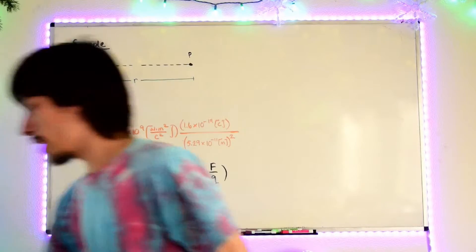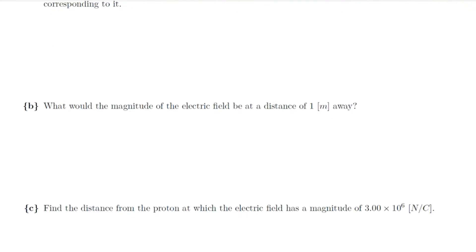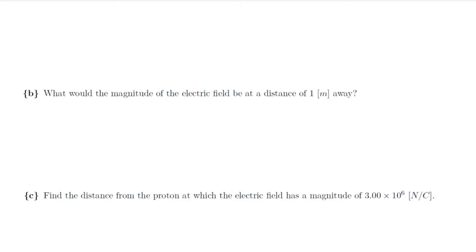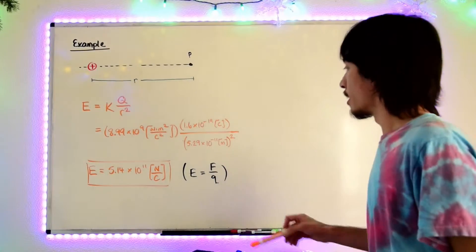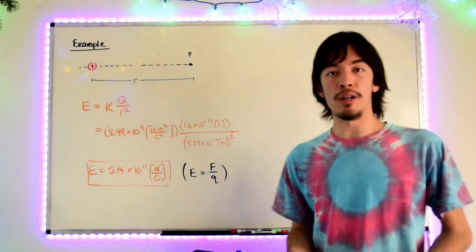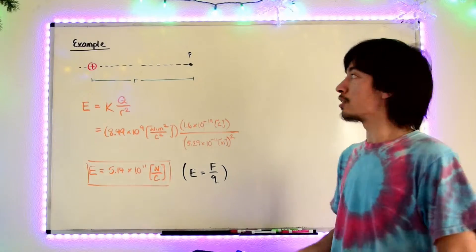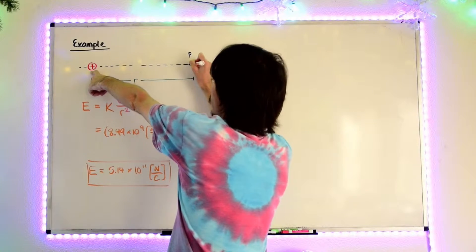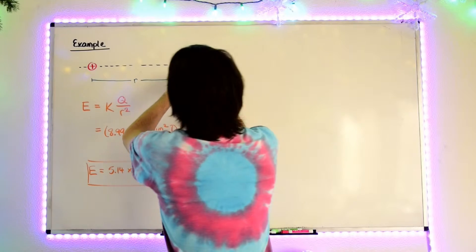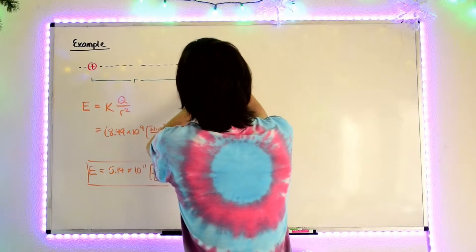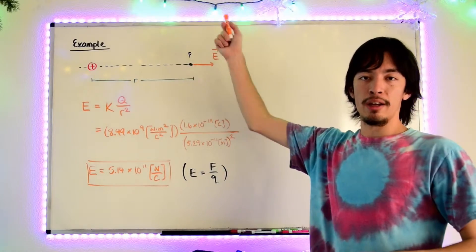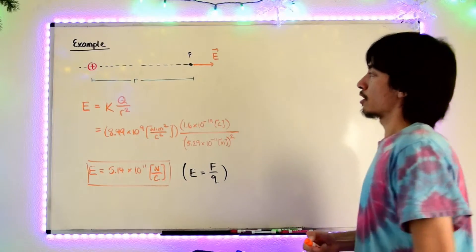Now we'll take a look at the next part. We also want to find the magnitude of the electric field one meter away, and also the direction. The direction is simply given by our conceptual knowledge. At this point, the electric field points away from that positive charge — you take that direct line of sight and draw along that line and away. That's our electric field. No matter where you are, the electric field will point away from that positive charge, or towards it if it was negative.